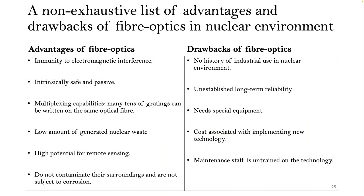Now comparing the advantages of these optical fibers and also the disadvantages. One of the nice things with these optical fibers is that they are immune to electromagnetic interference. They are intrinsically safe, passive — you don't have to power them — and you can multiplex, meaning you can have many measurement points along the fiber. There is a low amount of generated nuclear waste as we have seen from our simulations, there's high potential for remote sensing, and they do not contaminate their surroundings and are not subject to corrosion.